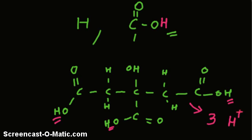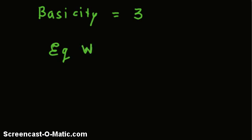The basicity of citric acid is 3. Now, equivalent weight is equal to molar mass divided by basicity.